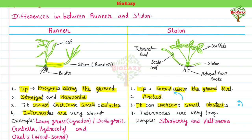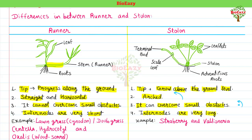The fourth difference: the internodes of a runner are very short. But the internodes of a stolon are very long.